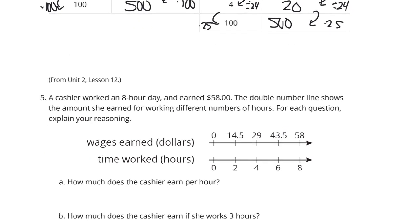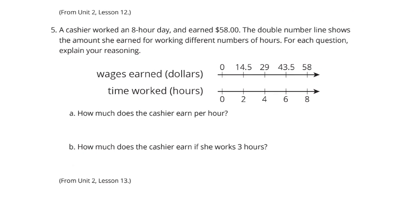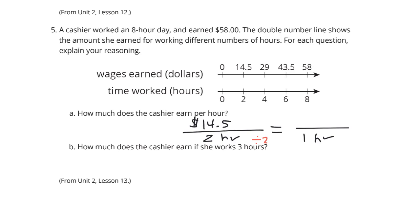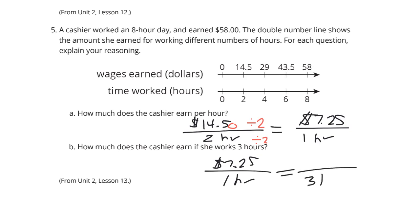Question 5. If a cashier worked an 8-hour day and earned $58, the double number line shows the amount she earned for different hours. How much does she earn per hour? We have $14.50 for two hours on the number line. Dividing by two gives $7.25 per hour. If she works three hours, take $7.25 times 3 — or add $7.25 to $14.50 — to get $21.75.